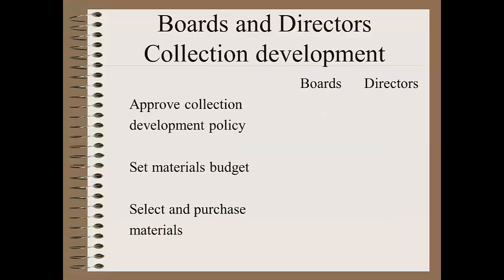Collection development: as part of its policymaking power, the board should have in place a material selection or collection development policy, and as part of its budget-setting authority, there is a set amount for expenditures on library materials such as books and DVDs. The duty of selecting which materials to purchase and then ordering them is the library director's, or in larger libraries other staff members to whom the director delegates this duty. Boards should not be making decisions about which books to purchase or which magazines to subscribe to.